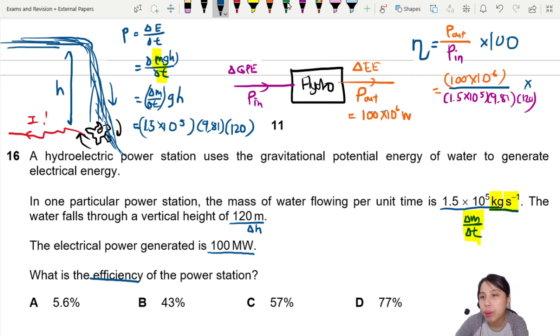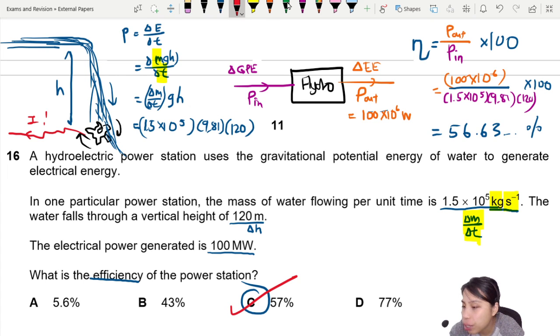We want percentage, right? So we multiply 100. This will give us about 56. I think I calculated just now 56.63. Blah, blah, blah, percent. Best choice? 57. So 57 here will be the best answer we can choose for the conversion of energy from this dam.